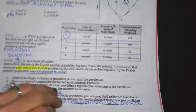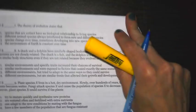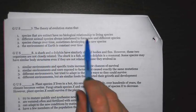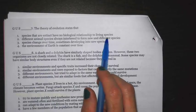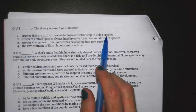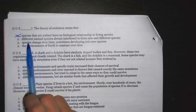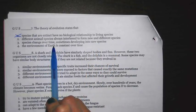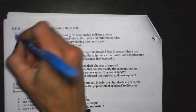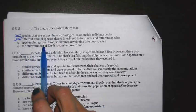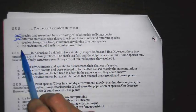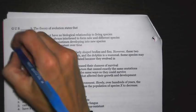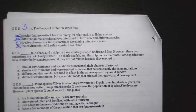Number seven says the theory of evolution states that — remember, evolution is looking at change through time. Number one says species that are extinct have no biological relationship to living species — no, every organism evolved from a common ancestor, so that's not true. Number two says different animal species always interbreed to form new species — different species can't breed because their genes are not similar enough to produce fertile offspring. Number three says species change over time, sometimes developing into new species — that could be true. Number four says the environment of Earth is constant over time — no, even in our lifespan, global temperature has gone up. Best answer choice is three.